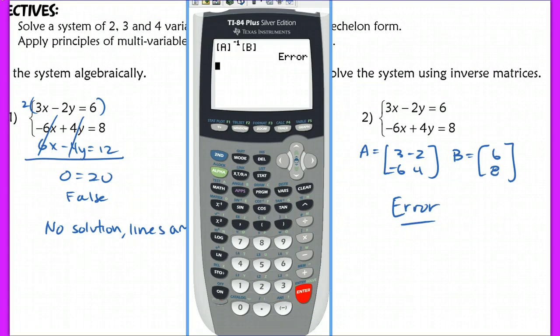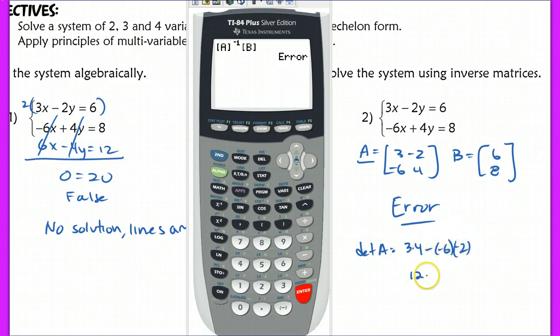Why are we getting this error message? If you look at matrix A here, matrix A does not have an inverse. The reason why is because the determinant of A is 3 times 4 minus negative 6 times negative 2, which is going to give me 0. So this has no inverse, which is why we can't use A inverse B, because A inverse does not exist.